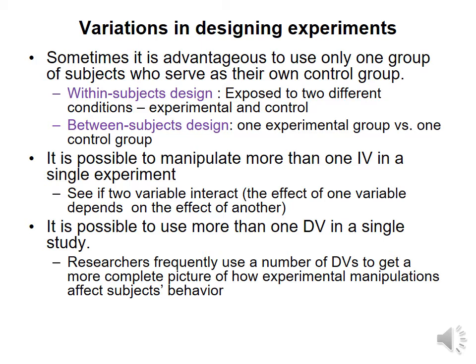It is possible to run experimentation that allows you to manipulate more than one independent variable and also to get data from more than one dependent variable. The reason we don't do this in high school is due to time constraints and because we often want you to see the outcome of the experiment.